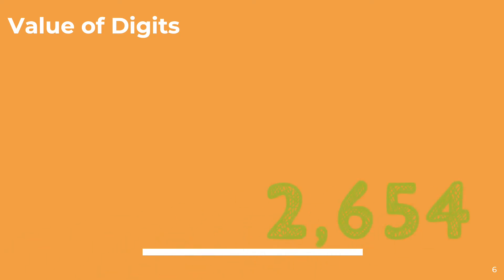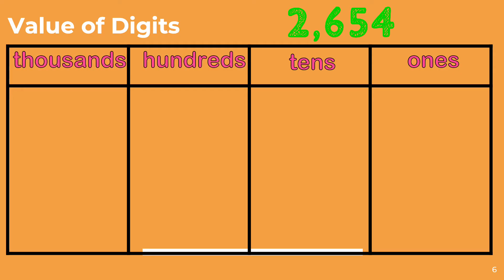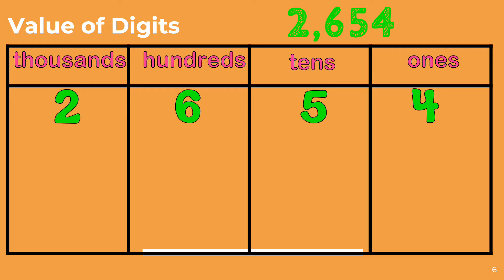Now we're going to look at what the value of the digits in a number represent or mean. Let's look at the number 2,654. To determine the value of the digits in 2,654, we are going to place them in a place value chart, starting from the lowest value to the highest or greatest value. We are now going to place the digits inside the place value chart. Now that we have our numbers in our place value chart, we will represent these digits using base 10 blocks.